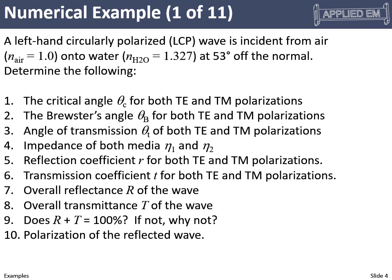Number one, calculate the critical angle for both polarizations. Second, the Brewster's angle for both polarizations. Then look at Snell's law and the angle of transmission for both polarizations. Calculate the impedance in both media. Calculate the reflection coefficient for both polarizations, the transmission coefficient for both polarizations, then the overall reflectance and transmittance of the wave. We'll check that they add to 100%, and finally determine the polarization of the reflected wave.